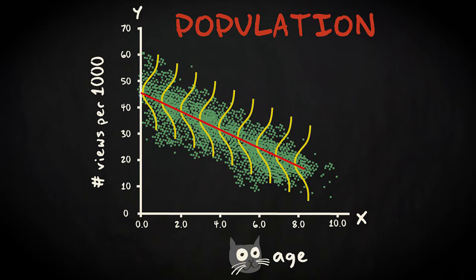More formally, the line describes the population means of the conditional response distributions, which are assumed to have a uniform shape and standard deviation.